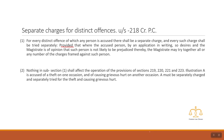The first subsection tells us the general rule. The general rule is that for every distinct offense of which any person is accused, there shall be a separate charge and every such charge shall be tried separately. This is the general rule.